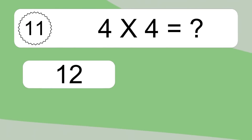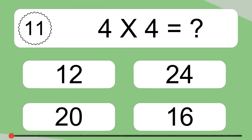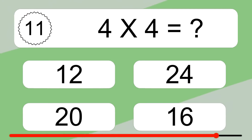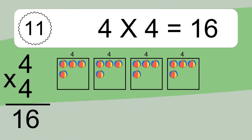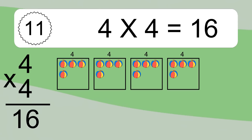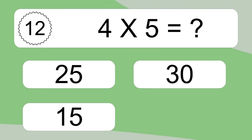4 times 4 equals what? If you count all the balls in all the boxes together, you will have 4 times 4 balls. This equals 16 balls.